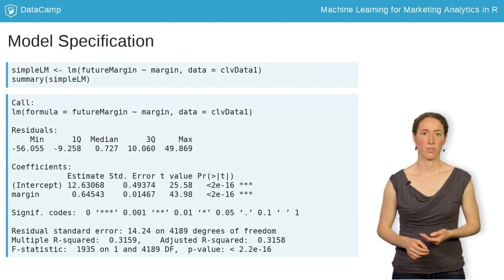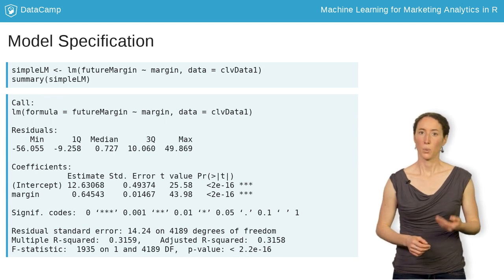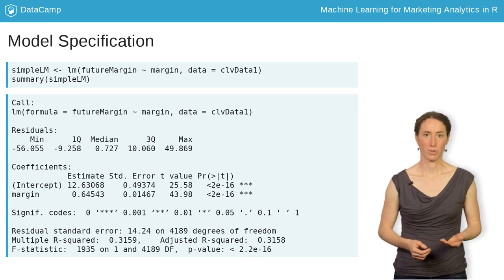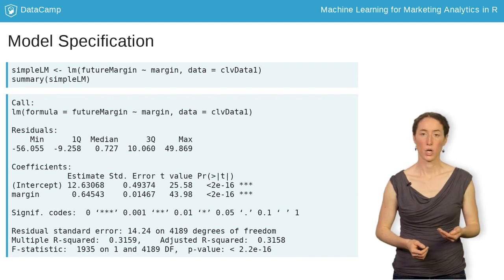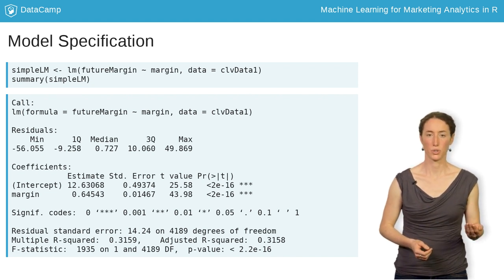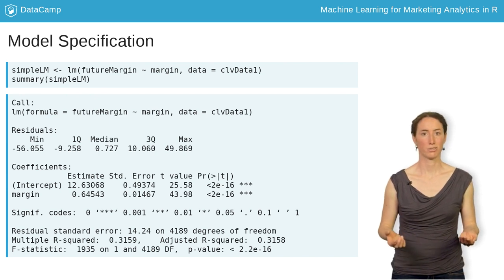That's enough theory. Let's move on to some code. We can specify the linear regression model using a formula object in the lm function from the stats package. Looking at the arguments, notice that we are looking to predict future margin as a function of margin using CLVData1. We store the model as simple lm.